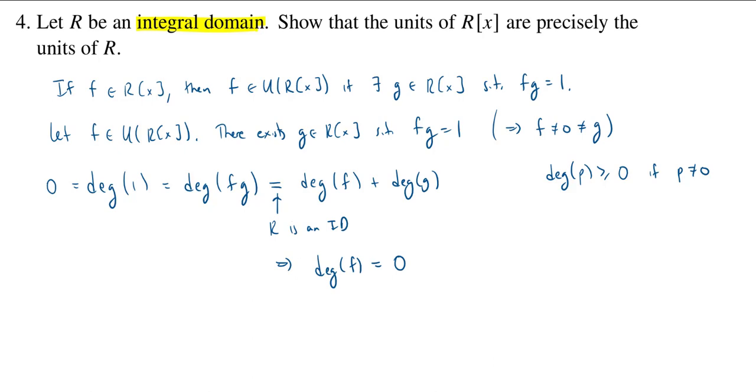But which polynomials have degree 0? Well, just the constants. So, this implies that actually f is not just a regular arbitrary polynomial. It's actually an element of the ring R. That's what it means to be a constant polynomial.